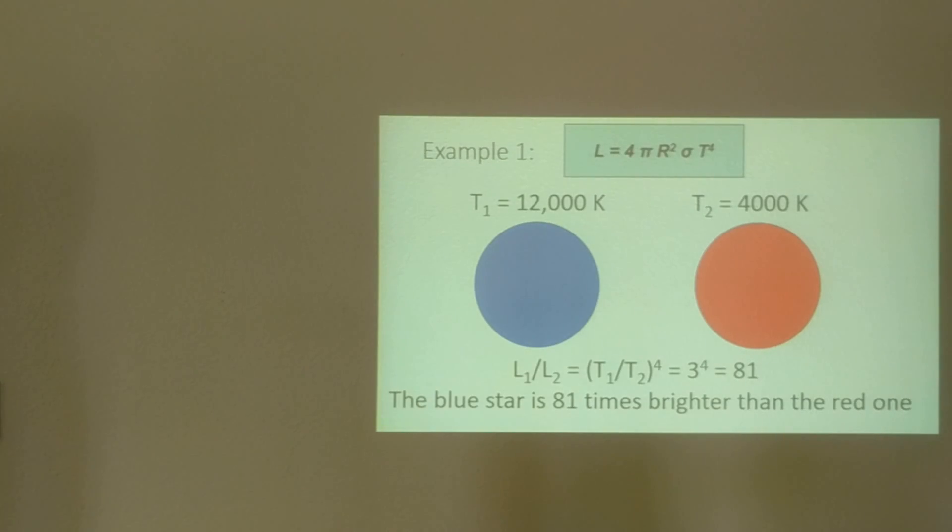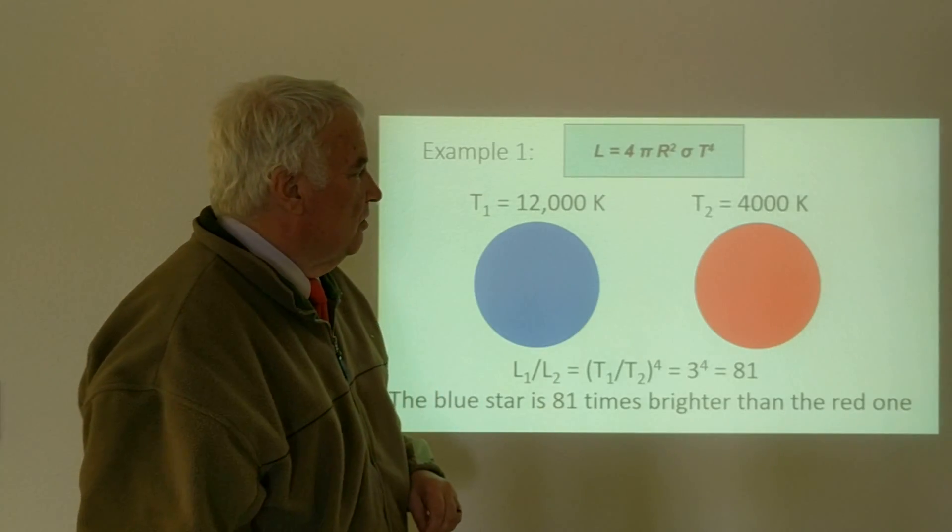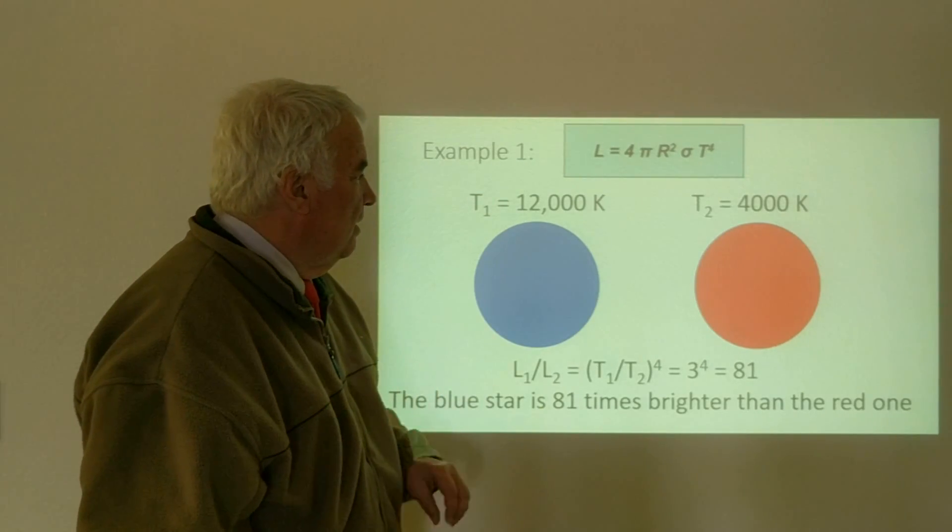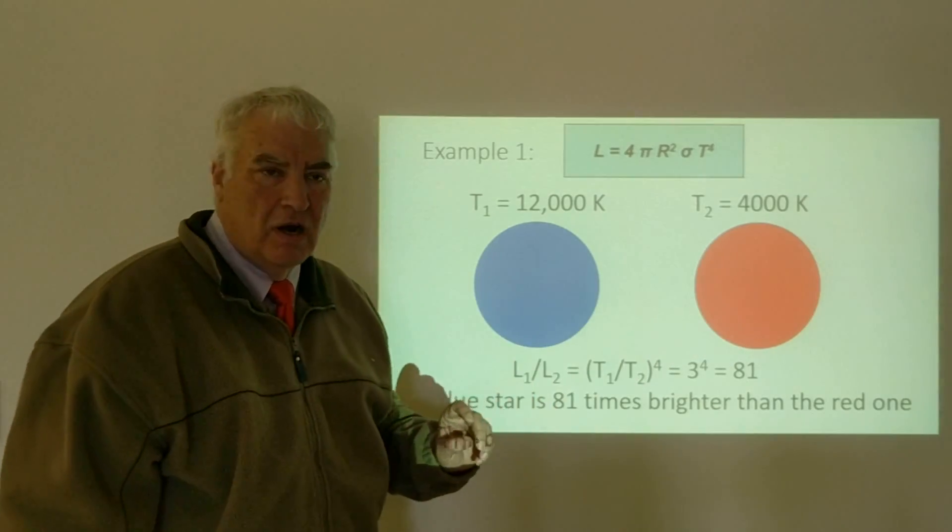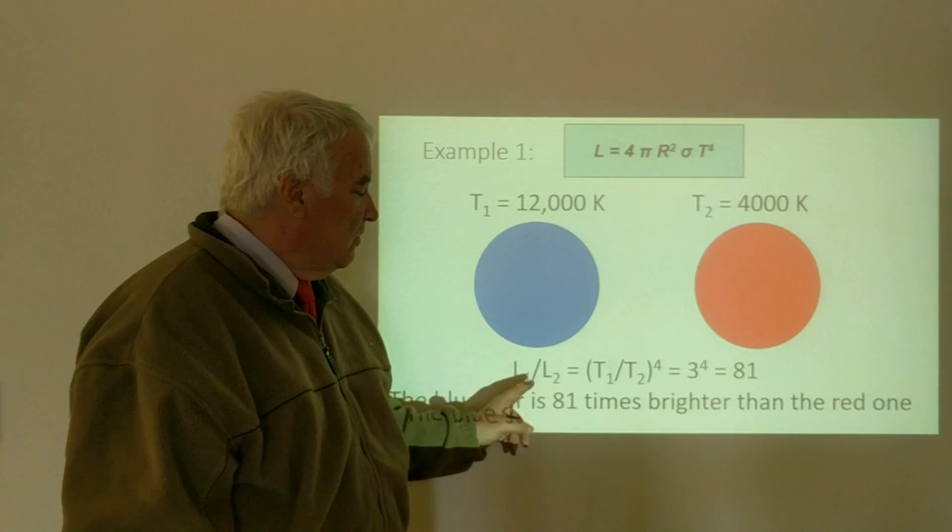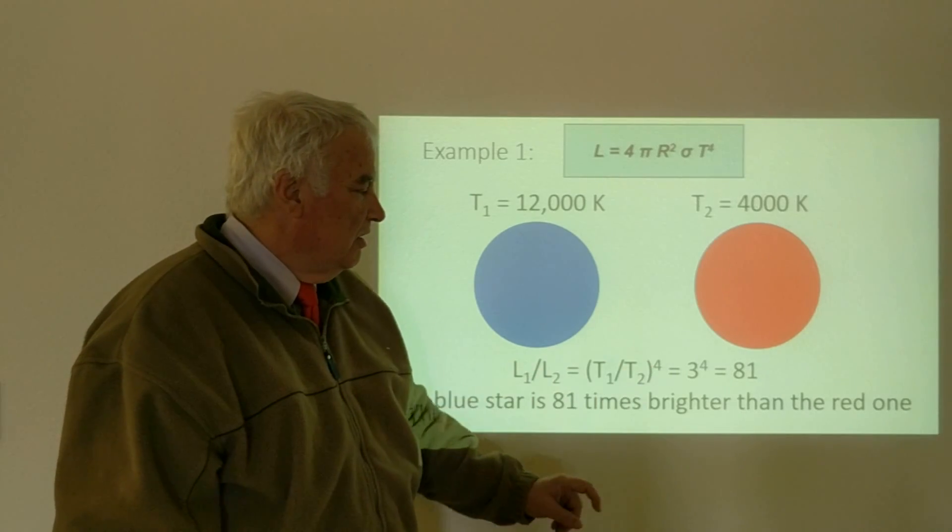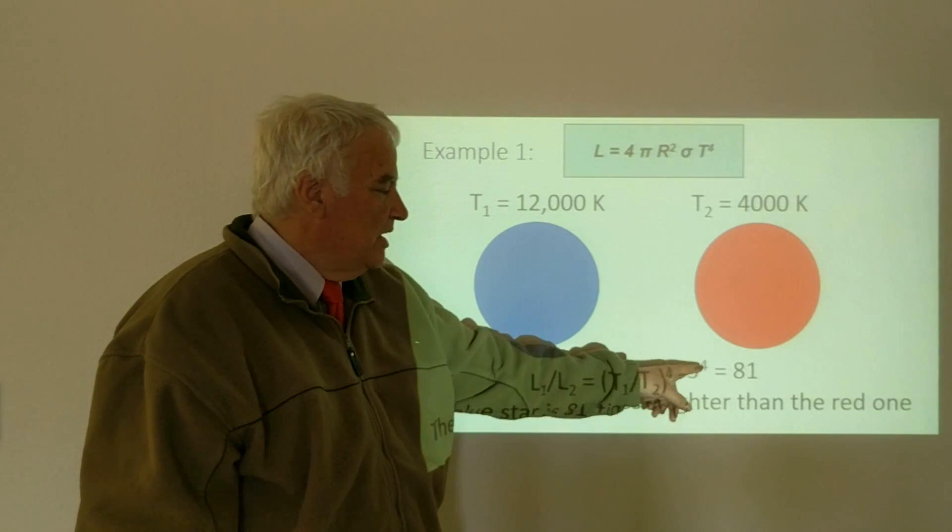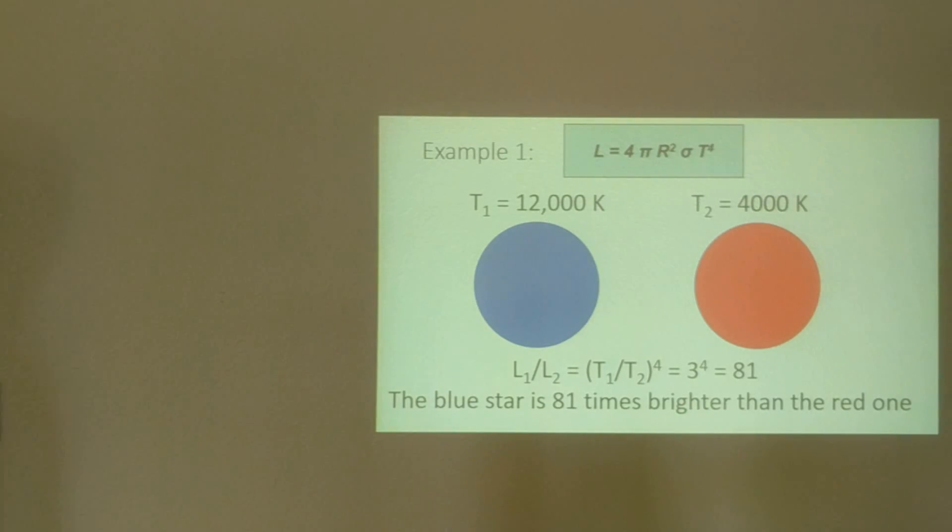For example, if we have a 12,000 degree star appearing kind of blue and a 4,000 degree star appearing kind of red, the temperature of this star is three times the temperature of that star, but they're the same size. But when I consider the luminosity, which would be the ratio of the temperatures to the fourth power, that three times becomes 3⁴ or 81. The blue star is 81 times brighter than the red one.